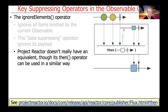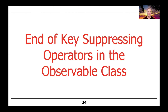Project Reactor doesn't really have an exact equivalent to ignore elements. However, its then operator can be used in a very similar way. It's often used, as with the Project Reactor version of async task barrier, to indicate that some sequence of operations chained together on a flux have completed, either synchronously or asynchronously. That's the end of our discussion of key suppressing operators in the RxJava observable class.